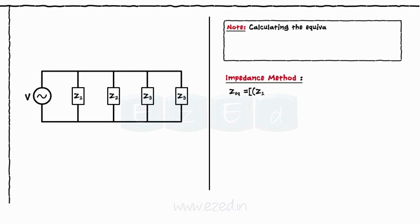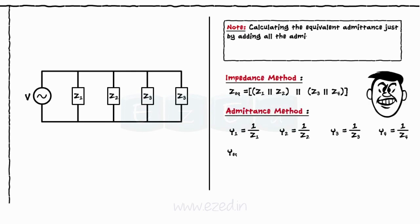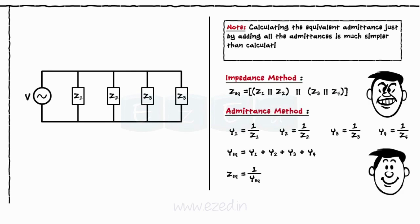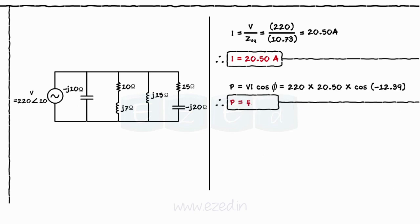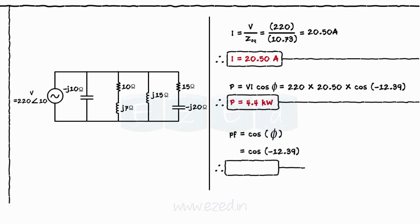Calculating the equivalent admittance by adding all the admittances is much simpler than calculating the equivalent impedance by computing parallel equivalent impedances. The total current becomes V upon Z equals 20.50 amperes. The power consumed by the circuit is VI cos φ equals 4.40 kilowatts. And the power factor is cos φ equals 0.9767.